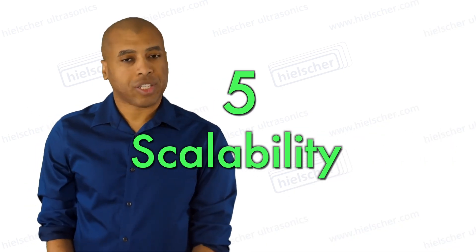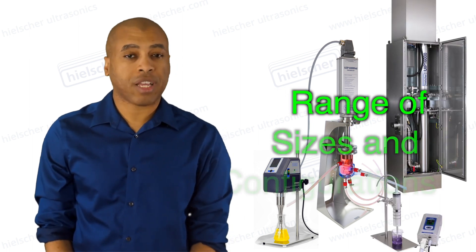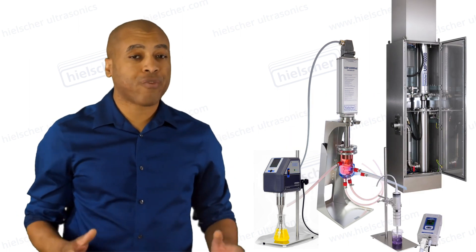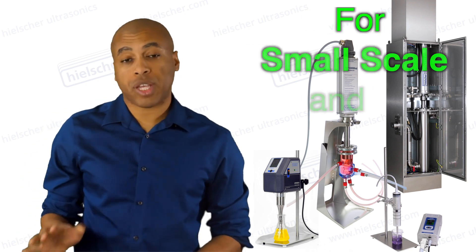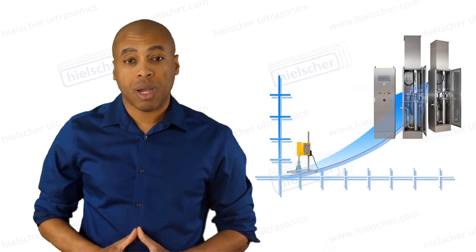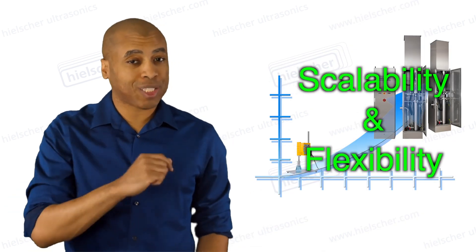Number five, scalability. Hielscher ultrasonic homogenizers are available in a range of sizes and configurations to accommodate different production scales. This makes them suitable for both small-scale and large-scale industrial processes, providing scalability and flexibility.